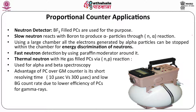Proportional counters are mainly used for neutron detection. Boron-filled proportional counters are used for this purpose because slow neutrons react with boron to produce alpha particles through an (n,α) reaction. Alpha particles are charged particles and are intensely ionizing, so neutrons are detected indirectly. Those alpha particles produce further ionization in the BF₃-filled proportional counters and the resulting current is measured. Using a large spherical chamber filled with BF₃, all the electrons generated by alpha particles can be stopped within the chamber and we can determine the energy of the neutron source.